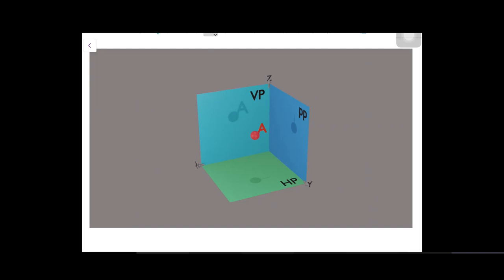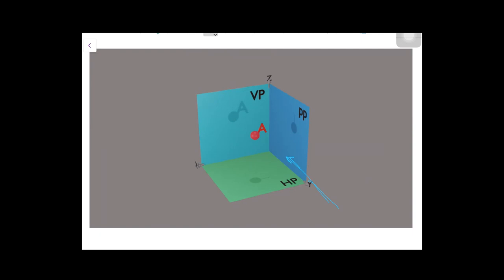Today we will start with the topic of projection of points. In this figure you can see a point A — the point A is in the first octant. It lies above the horizontal plane and also in front of the vertical plane. When I watch it from the front, I get its projection on the vertical plane. If I hold a torch at the place of this arrow, I will get a shadow of this point on the vertical plane — the projection will lie on the same place as its shadow.